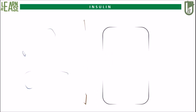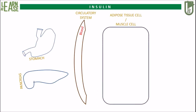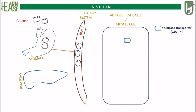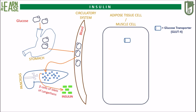First, let us understand the basics of insulin circulation. The essential organs required to understand the mechanism are shown here. When glucose enters the digestive system from diet, it enters the blood and circulates throughout the body. This activates beta cells of islets of Langerhans of the pancreas to release insulin into the blood. Insulin will travel in the blood and bind to its receptor on the target cell, which is a muscle cell or it can be an adipocyte.